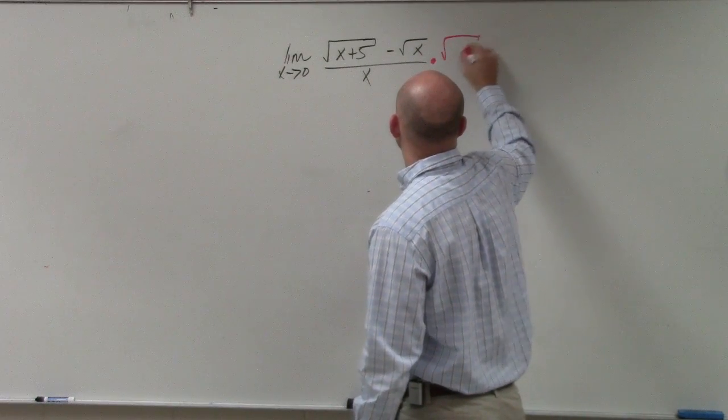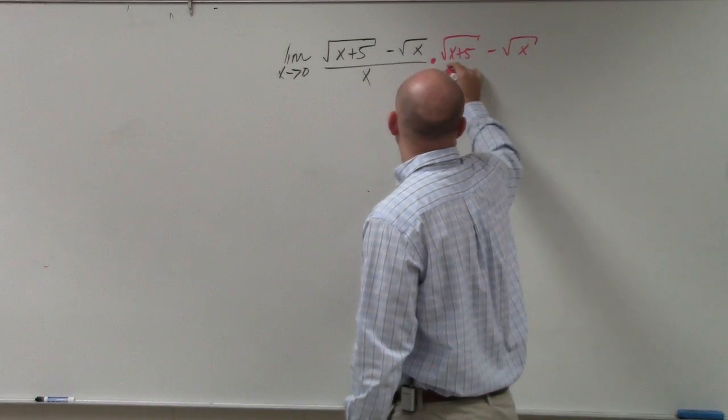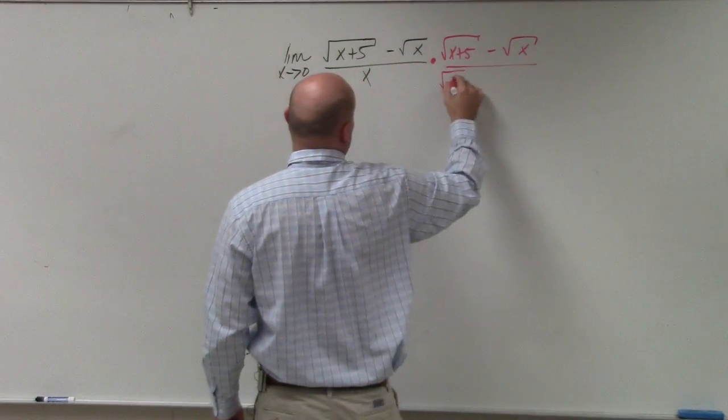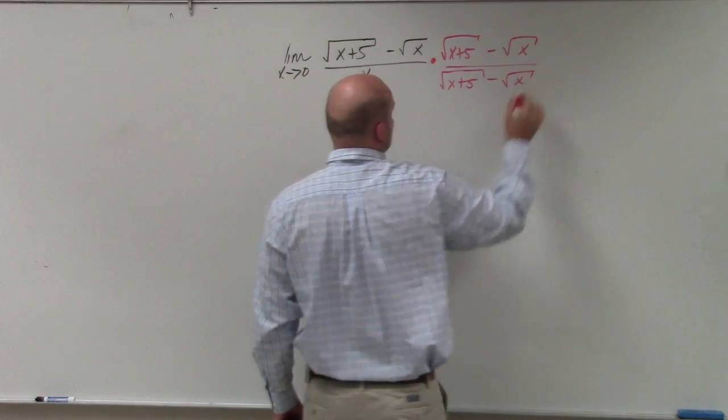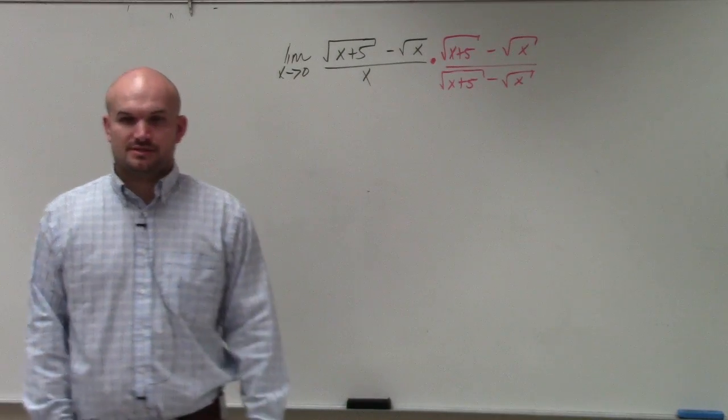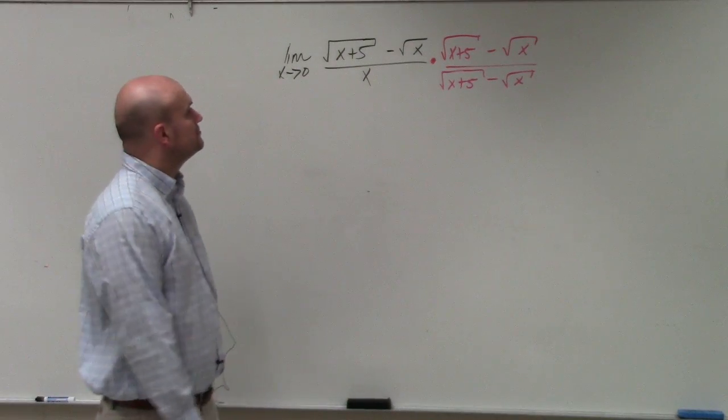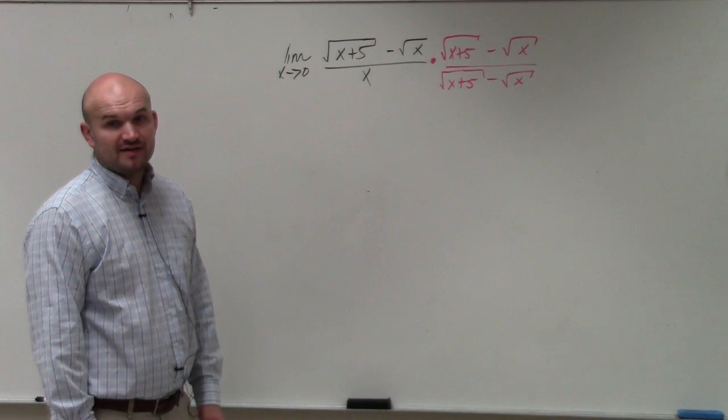In this case, it's going to be x plus 5 minus the square root of x, and then whatever you multiply in the bottom, you have to multiply in the top. Anybody have any questions with what I did so far? Yes? Did I change the problem? So it's square root of 5?